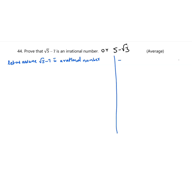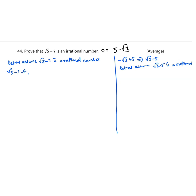The second problem is -√3 + 5, which can be written as √3 - 5. Let us assume √3 - 5 is a rational number. Then we write √5 - 7 equals a/b.